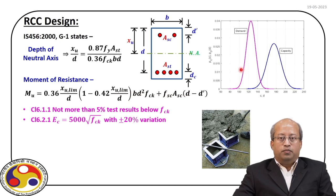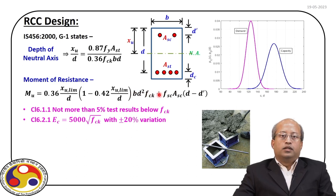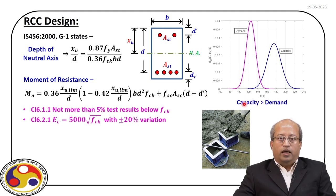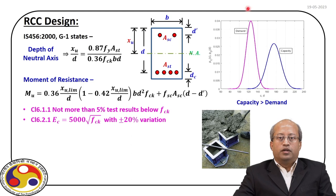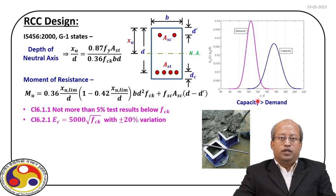In this course, we will try to bridge that gap so that we can bring in uncertainty within this design framework specified within our codal provision. Now from our experience, we have seen that structures which are designed using a factor of safety more than one also experience failure when they are exposed to actual load cases. So we use two terms — capacity and demand — and so long as our capacity is more than the demand, we conclude that our design is safe.